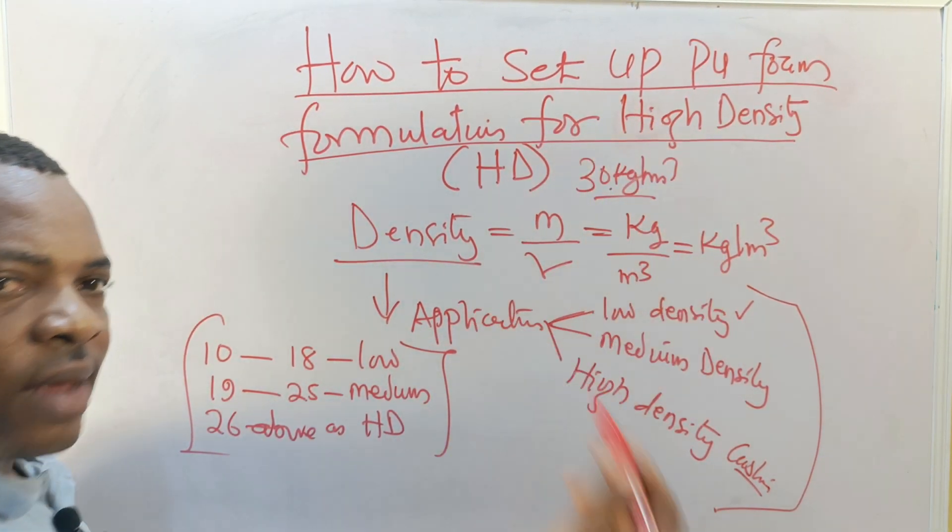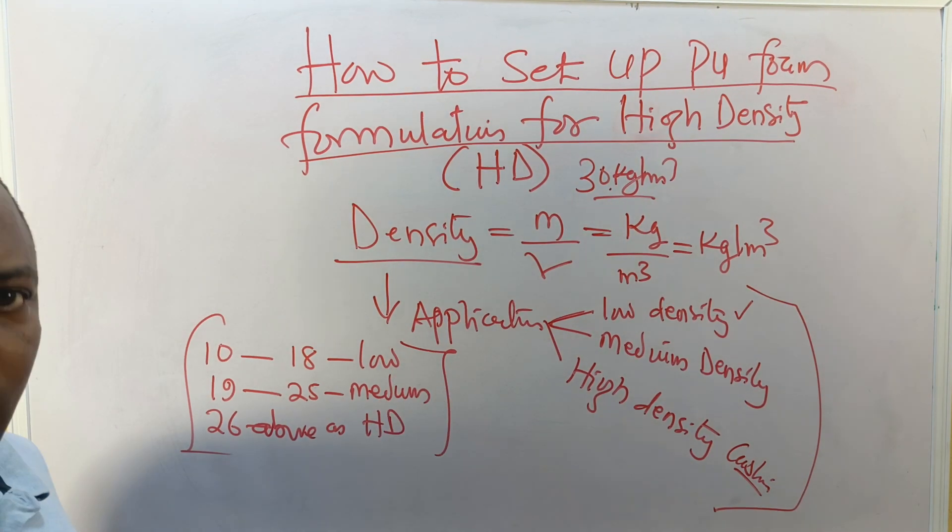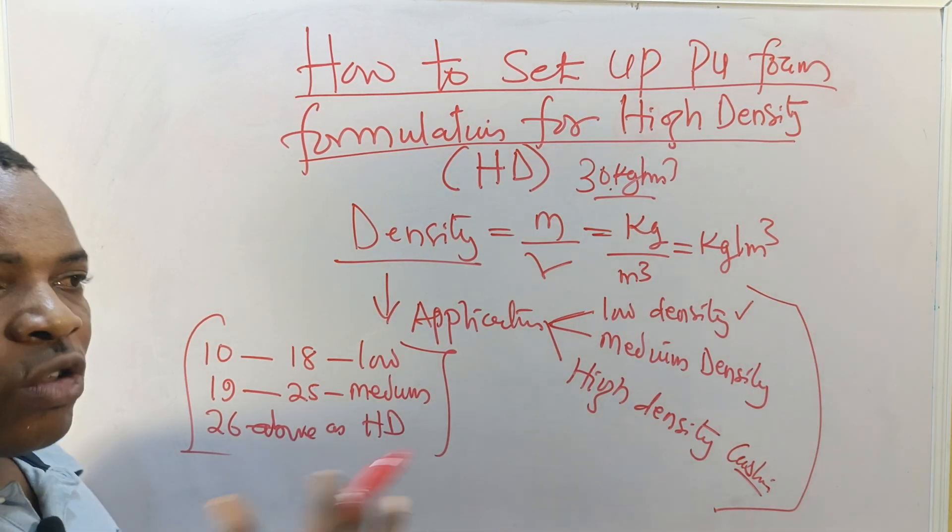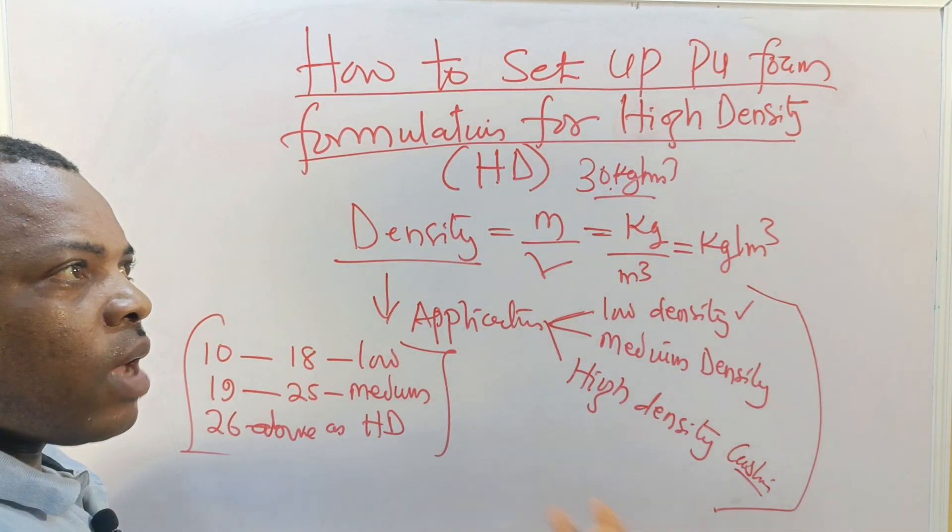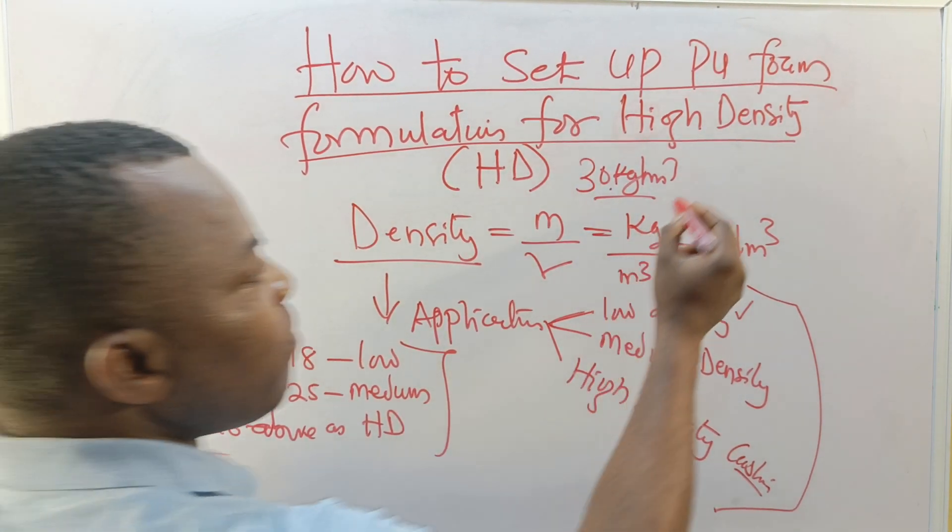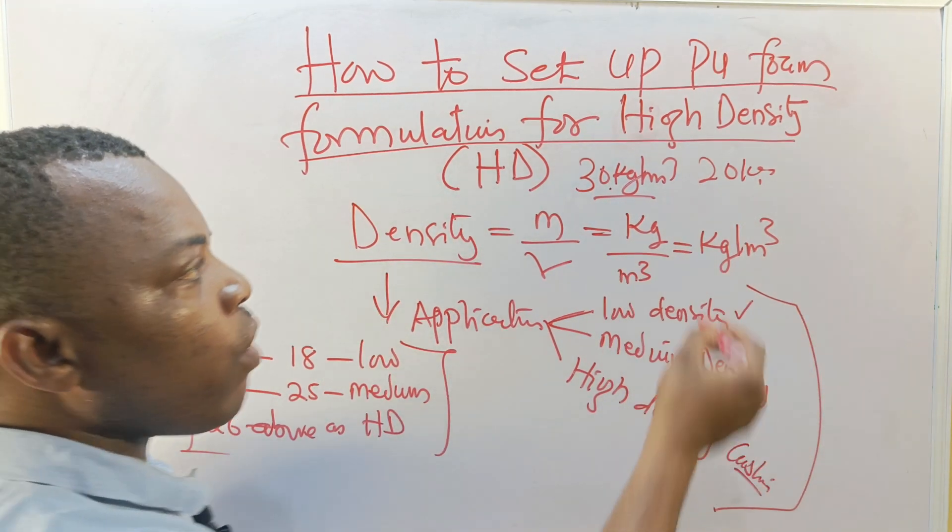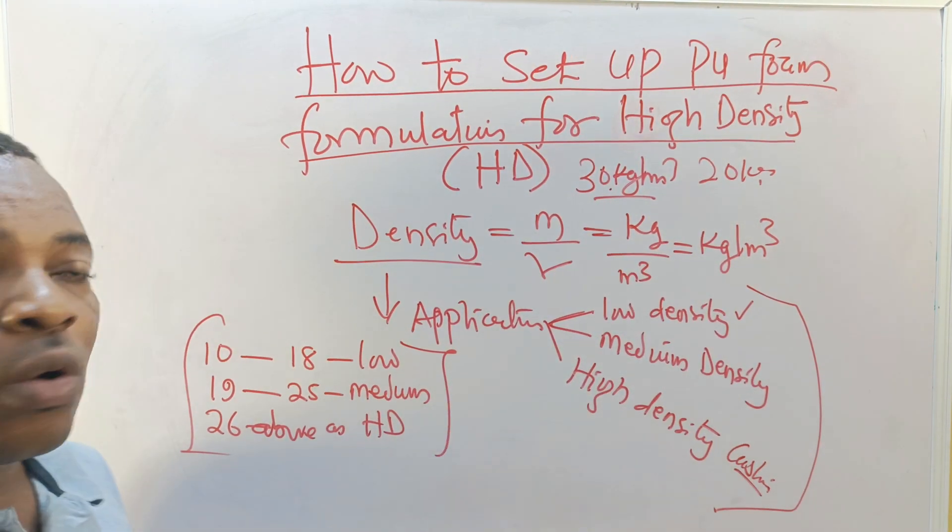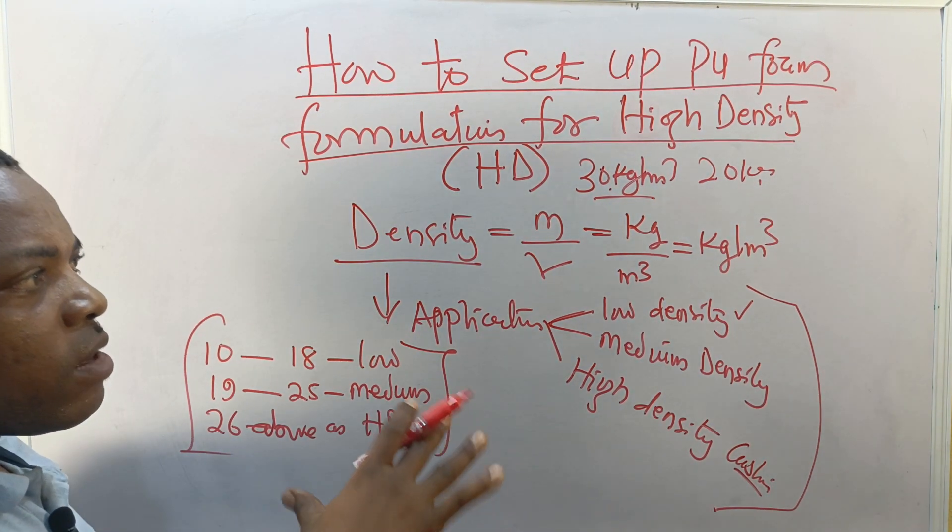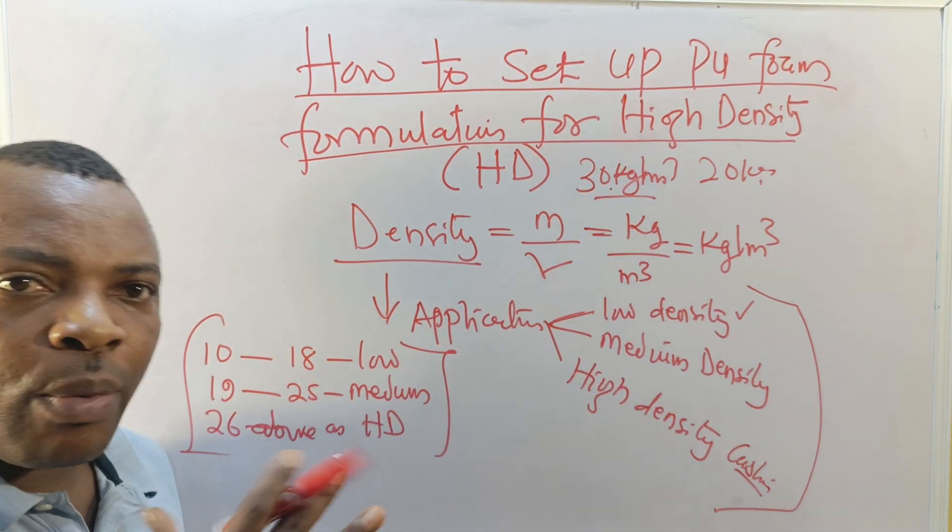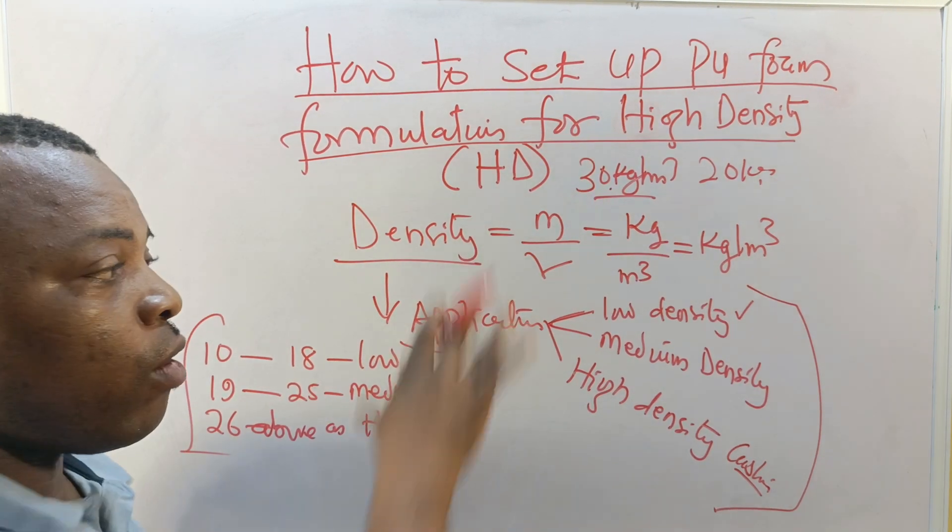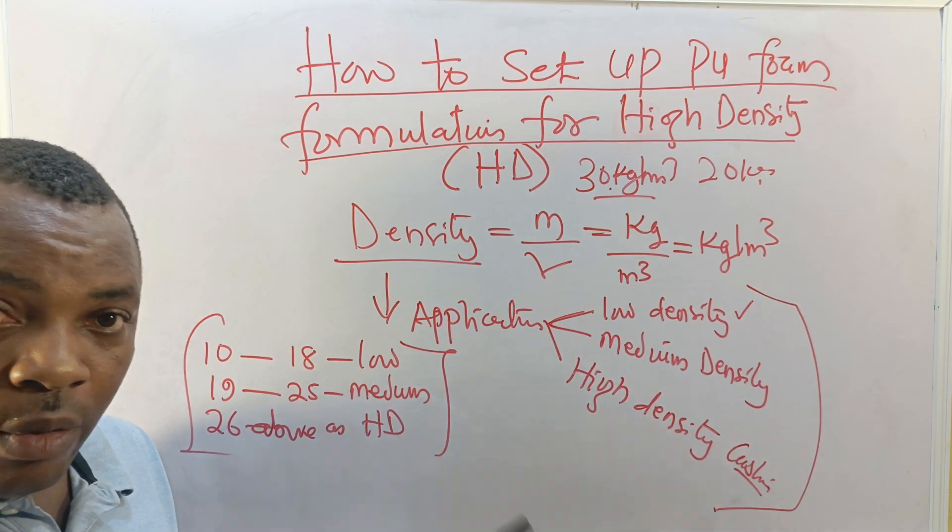It's all depend on the economy of the nation, so the numbers do not fix globally. It depends on how strong the country economy is. They can decide to say every 20 density is low, another country may say 20 density is high. It depends on how the regulatory bodies agree consensually by placing their own standard for PU foam in that country.